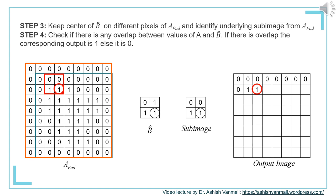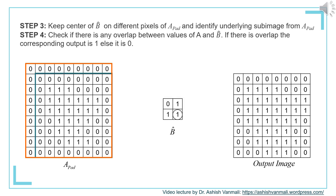Wherever there is overlapping of ones, the corresponding output will be 1. If there is no overlap between the ones of B-cap and the corresponding sub-image, the output will be 0. Proceeding this way, we complete the entire result. This is the final output image — the output of dilation.